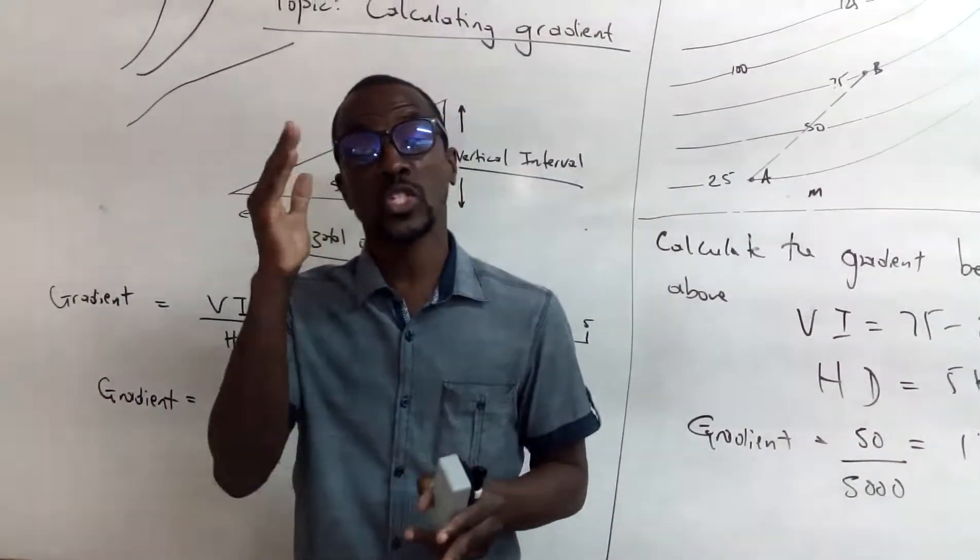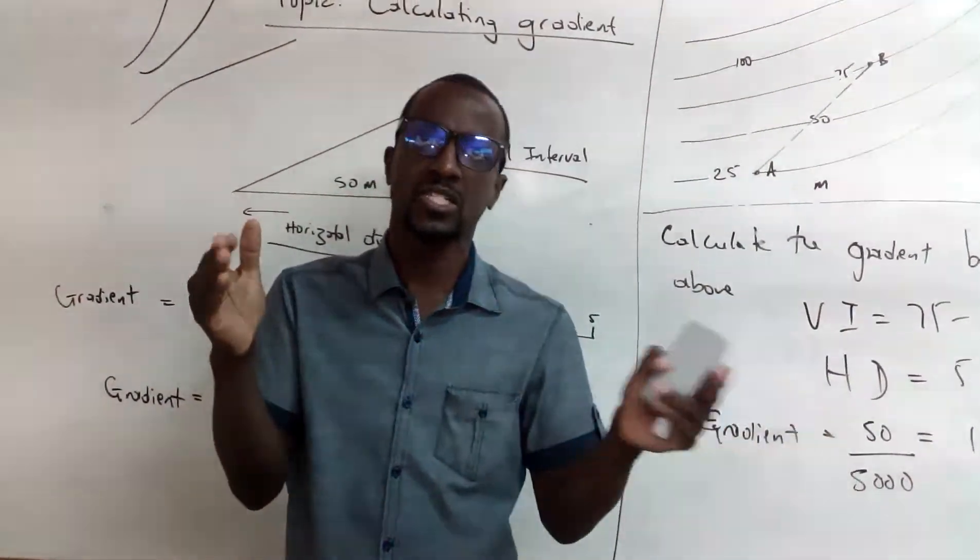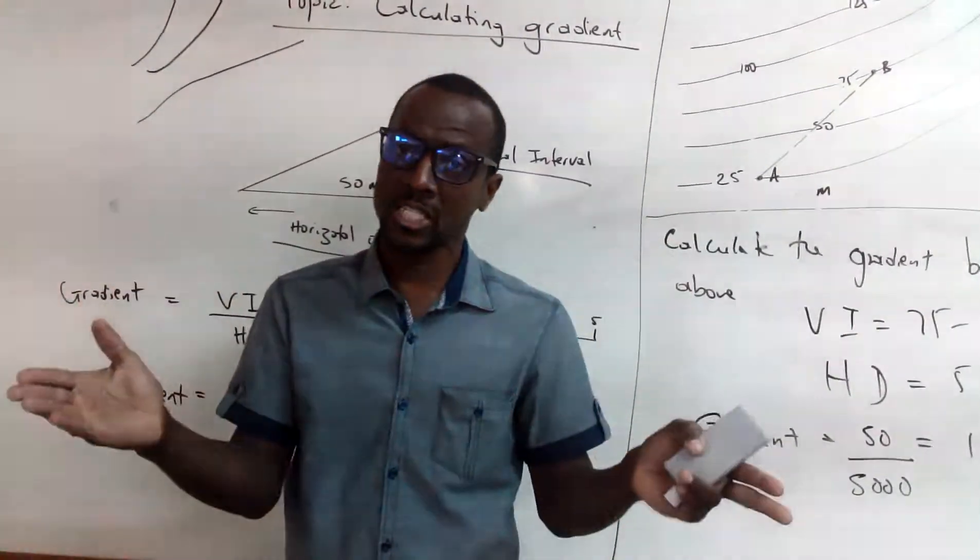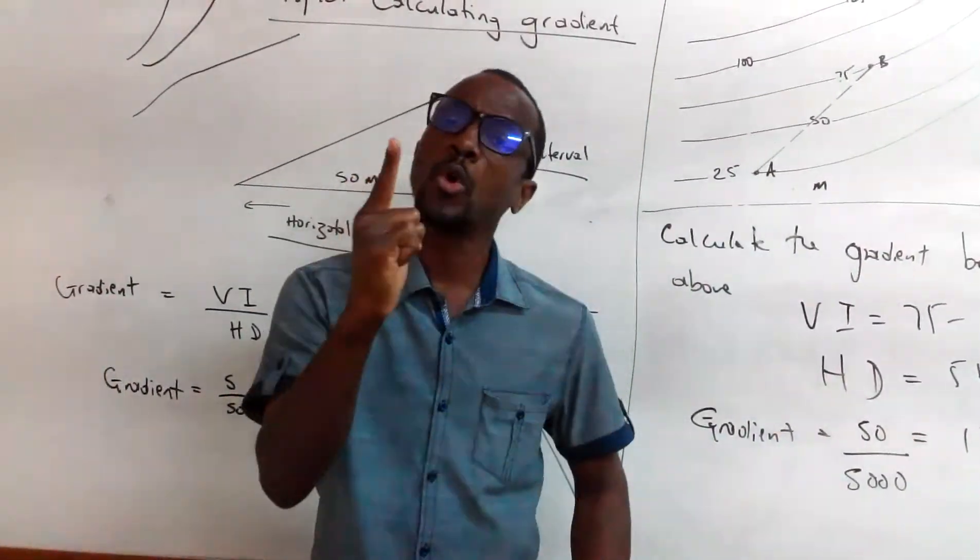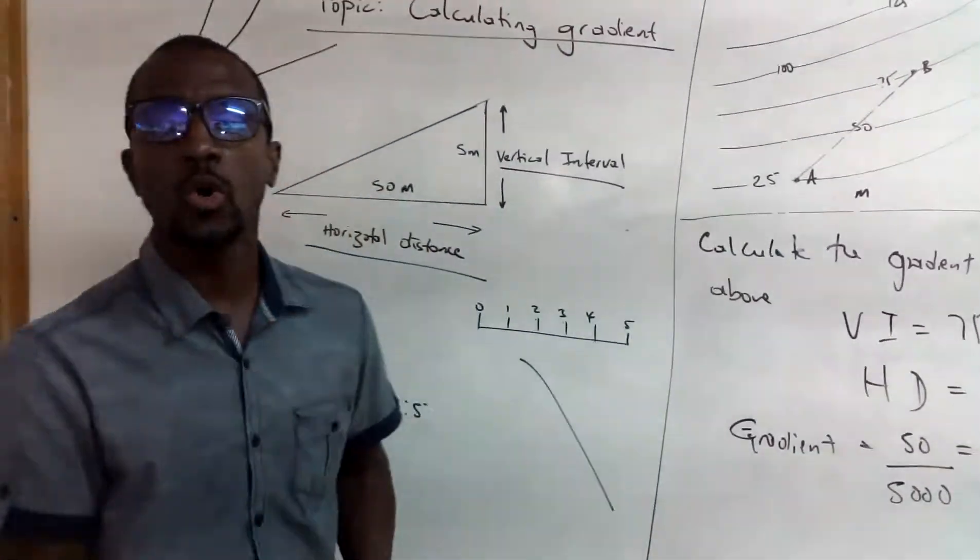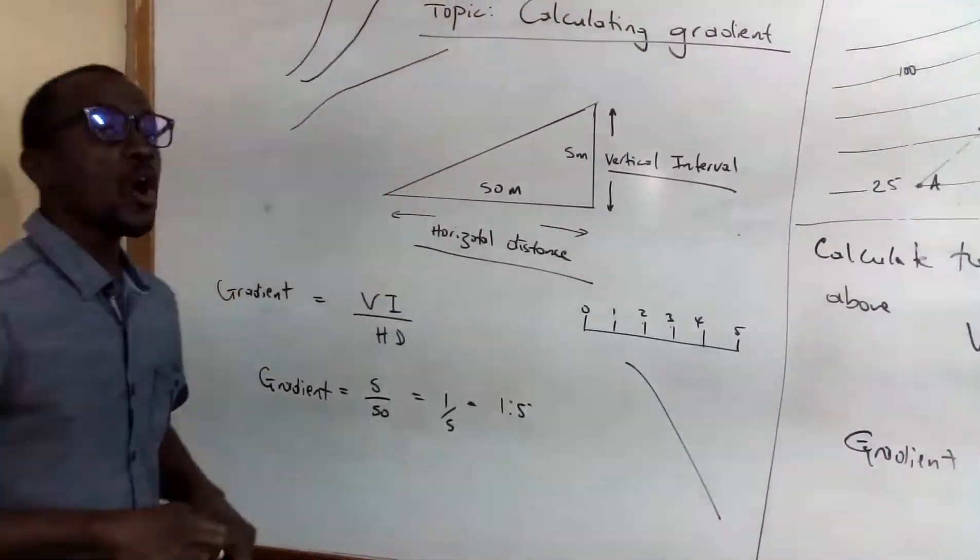Gradient refers to the slopiness or the flatness or the steepness of the land surface area. So how do you calculate gradient? Let's go on the board and let's check this one out.